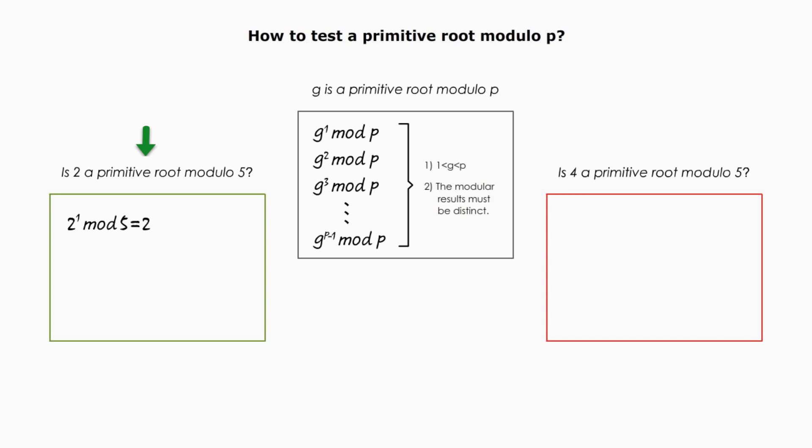2 to the second power is 4. 4 modulo 5 is 4. 2 to the third power is 8. 8 modulo 5 is 3. 2 to the fourth power is 16. 16 modulo 5 is 1. So it simply is just to get the remainder.